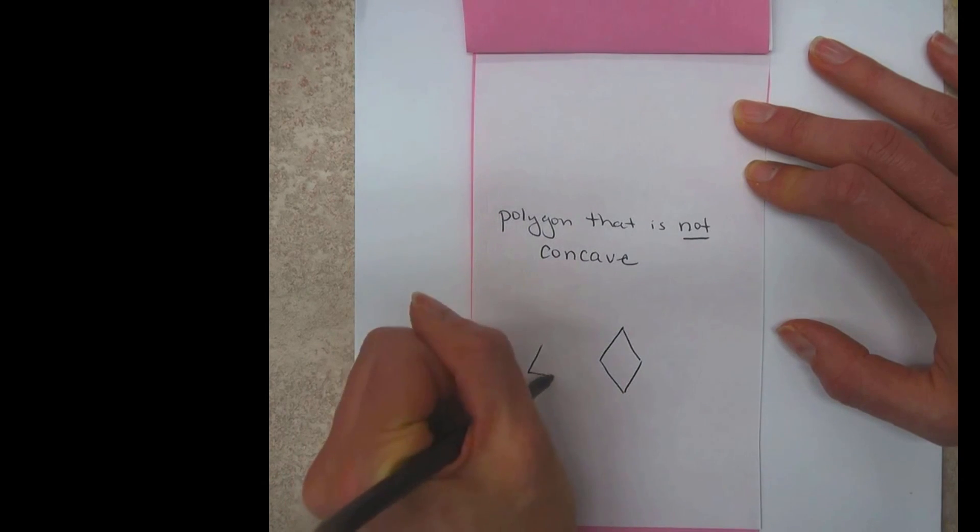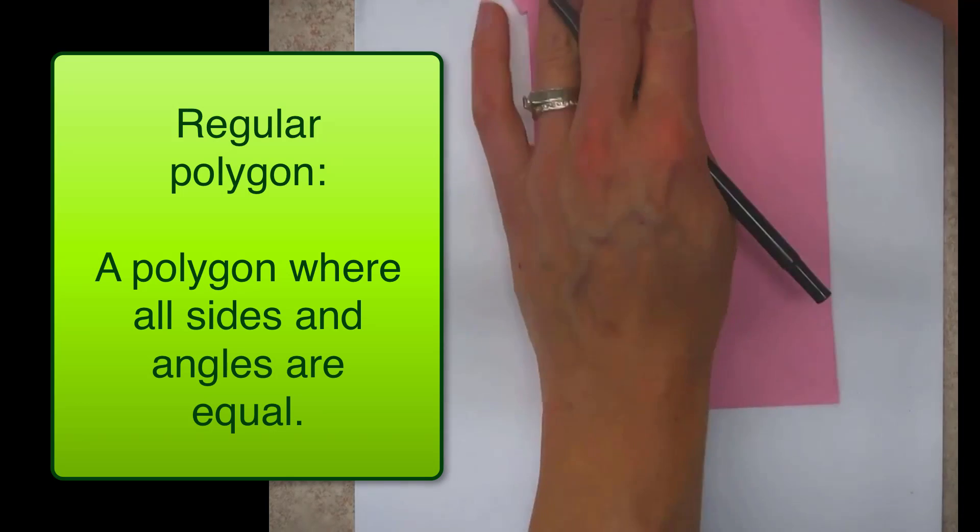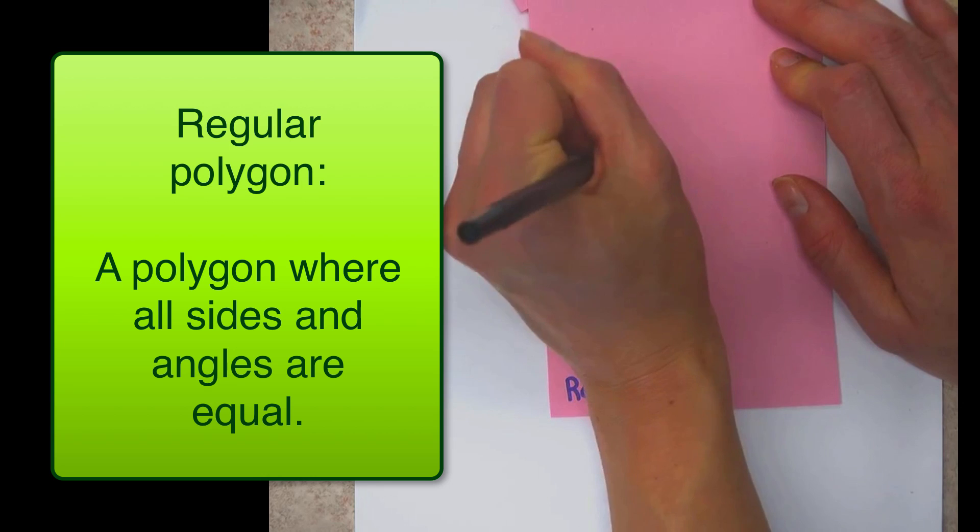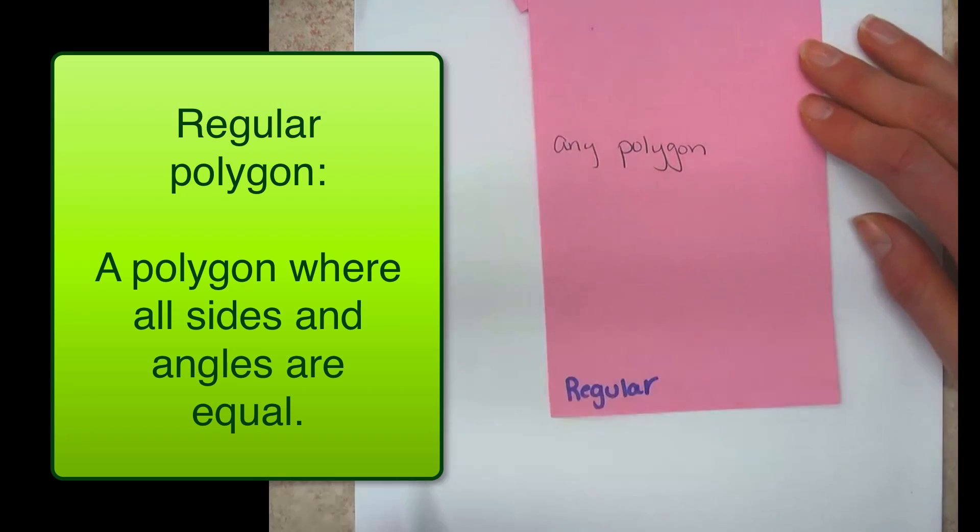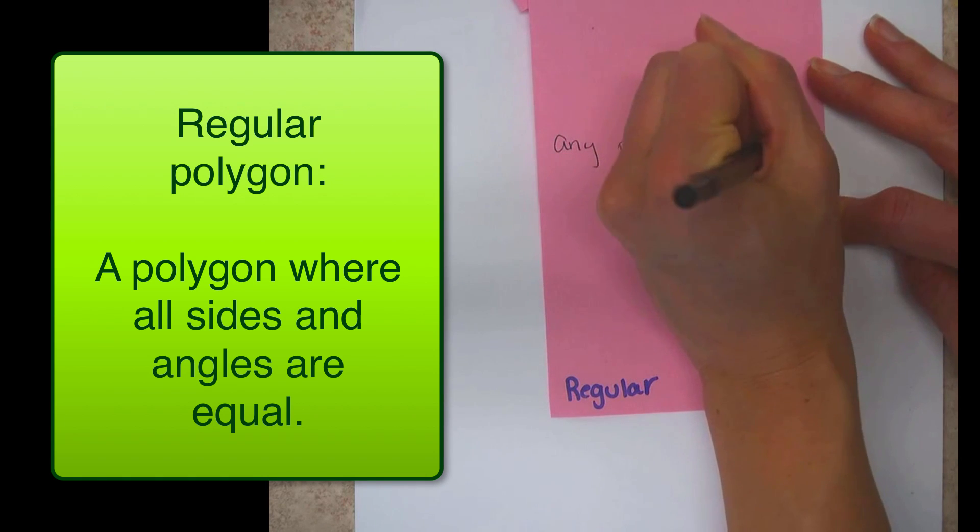And then our last one is a regular polygon. And a regular polygon is just any shape where, or any polygon where all the sides and angles are equal or congruent. So a square is an example of a regular polygon, any polygon in which all sides and all angles are equal.